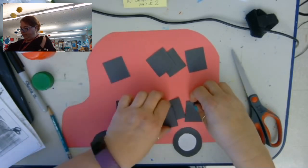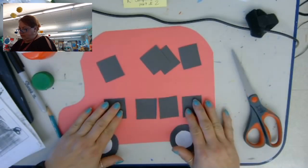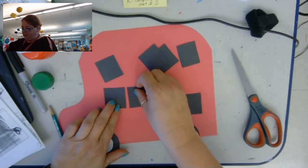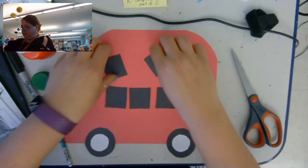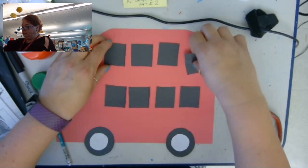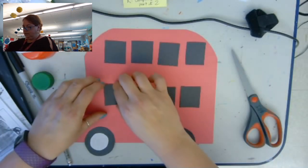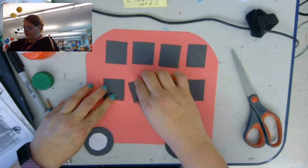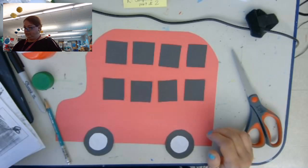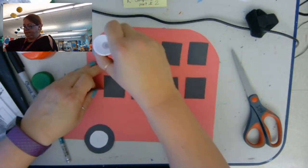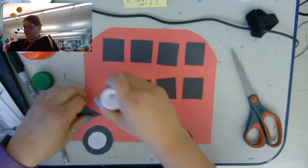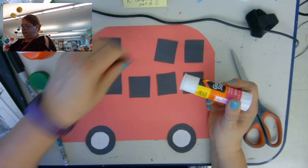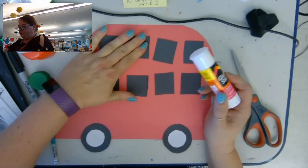Then I'm going to lay them here just so I can see where I want to glue them. Once I'm satisfied with where they are and how they look, then I'm going to glue them on. You can add any details you want to your picture. If you want to use white windows and draw people, that's wonderful.